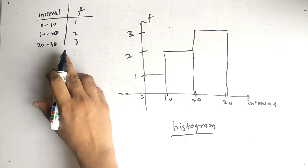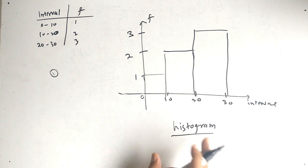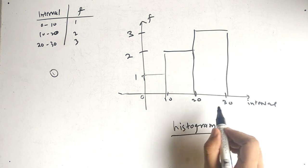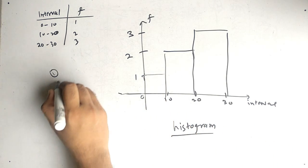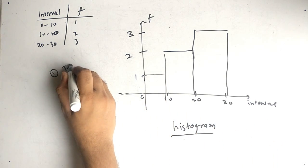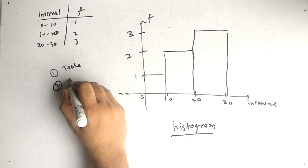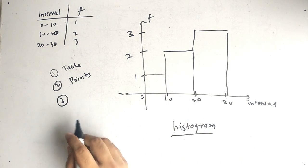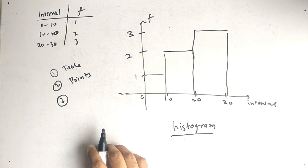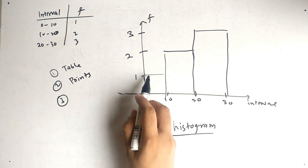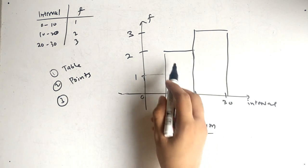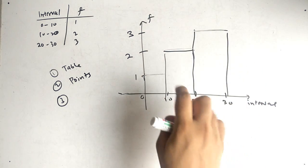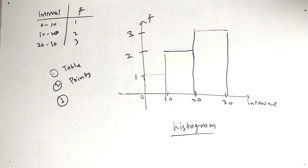To summarize the steps: first write the table, second write the coordinates — 0, 10, 20, 30 on x-axis and 1, 2, 3 on y-axis. Third, follow the steps: from 0 to 10 it is 1, 10 to 20 it is 2, 20 to 30 it is 3, and draw the vertical lines to complete the plot.